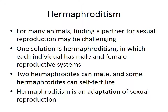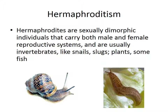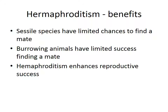Hermaphrodites are sexually dimorphic individuals that carry both male and female reproductive systems. They are usually invertebrates like snails or slugs, plants, and even some fish. The benefits: if you're sessile — unable to move around — you have very limited chances of finding a mate. If you're a burrowing animal digging around in the dirt, finding a mate is very hard. Therefore hermaphroditism enhances reproductive success — it's a bridge between both worlds, not purely asexual, not purely sexual, producing diversity while doing everything independently.